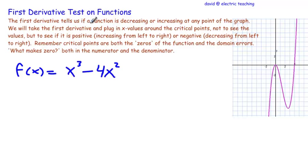The first derivative test tells us if a function is decreasing or increasing at any point of the graph. We will take the first derivative and plug in x values around the critical points, not to see what the values are, I just want to see if it's positive, increasing from left to right, or if the derivative value is negative, which means it's decreasing from left to right.